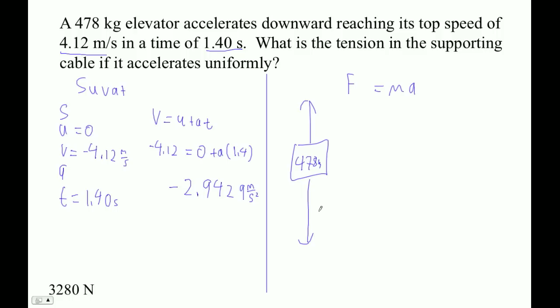So the downward force is the force of gravity. That's going to be 478 times 9.81. And that is 4,689.18 newtons.